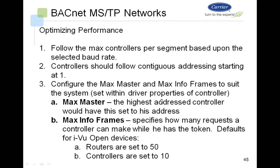Configure the max master and max info frames to suit the system. Max master is the maximum number of controllers on the network — the maximum is 127 BACnet master controllers, which is the default. Max info frames is the number of requests a controller can make while it holds the token. The default for open devices is 50 for routers and 10 for controllers; routers have a higher value because they are funneling information from the iView server or from a different router to that MSTP network segment.